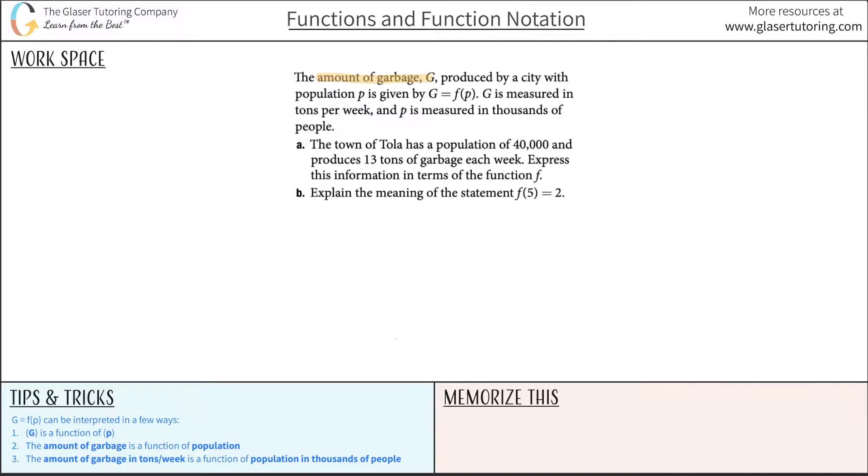The amount of garbage G produced by a city with population P is given by G equals a function of P. G is measured in tons per week and P is measured in thousands of people. Letter A says the town of Tola has a population of 40,000 and produces 13 tons of garbage each week. Express this information in terms of the function F.